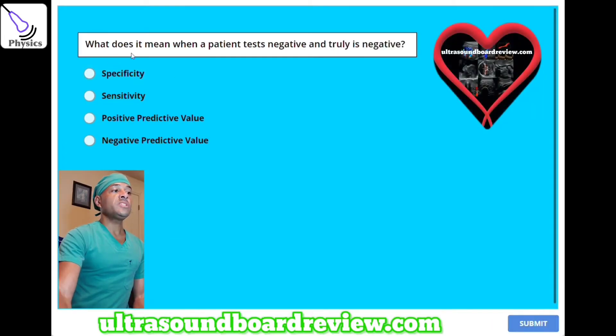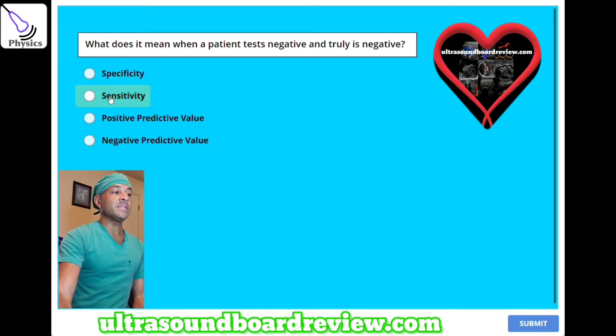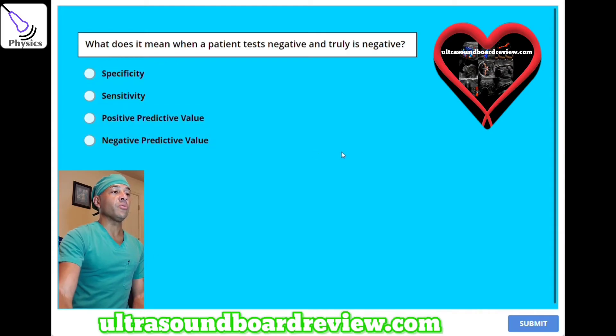What does it mean when a patient tests negative and truly is negative? A: specificity, B: sensitivity, C: positive predictive value, or D: negative predictive value?